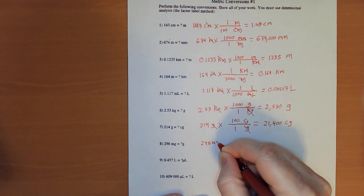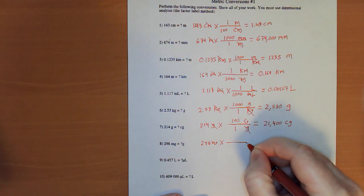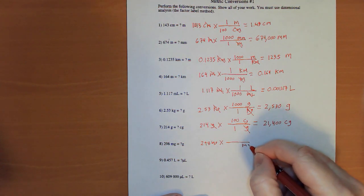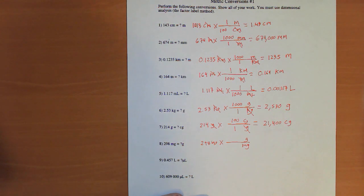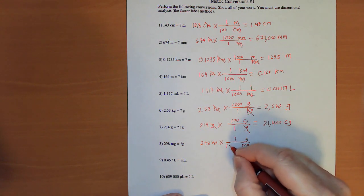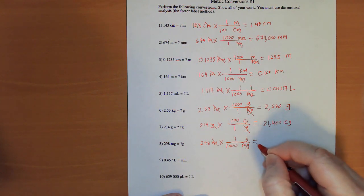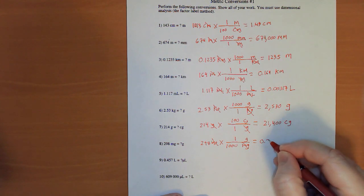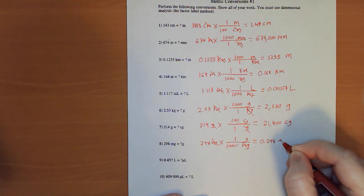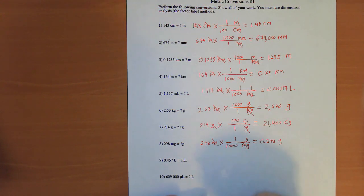298 milligrams times. I want milligrams to cancel. I want to get grams. 1 gram has 1,000 milligrams. Milligrams cancels milligrams. 0.298 grams.